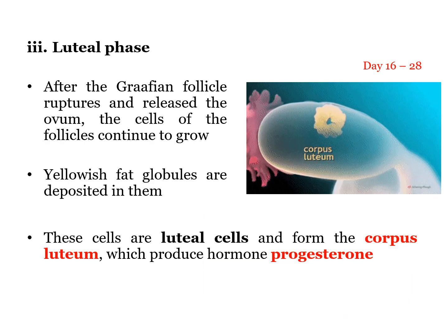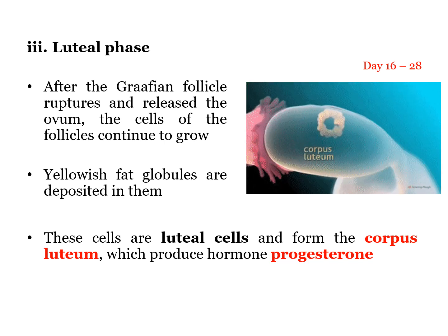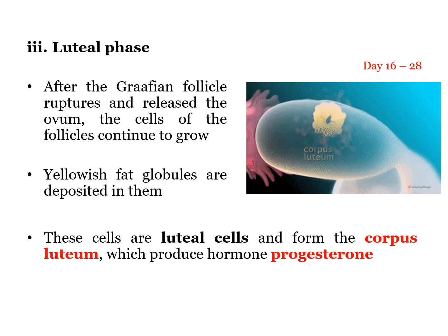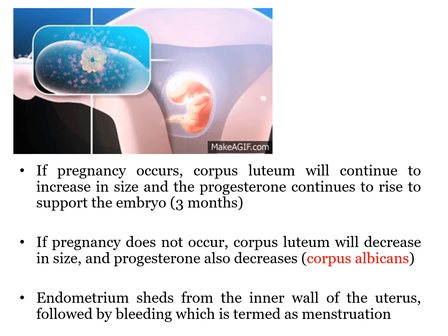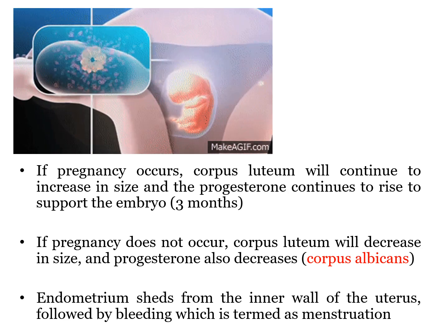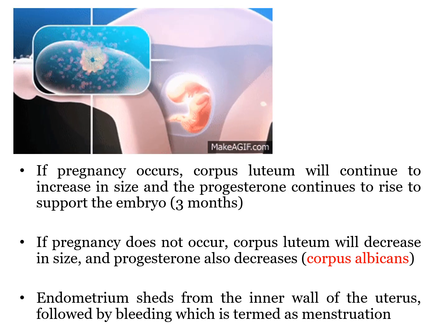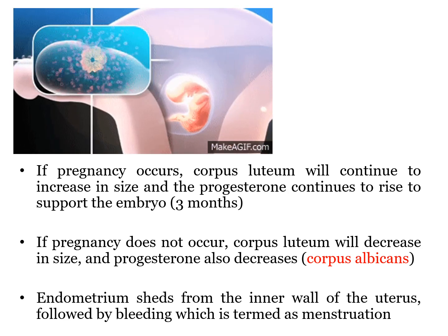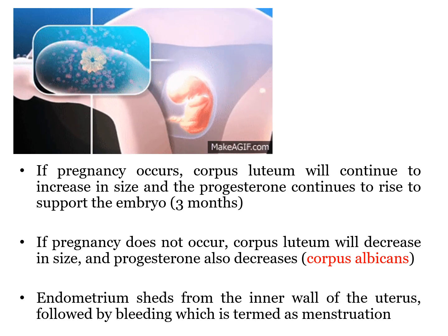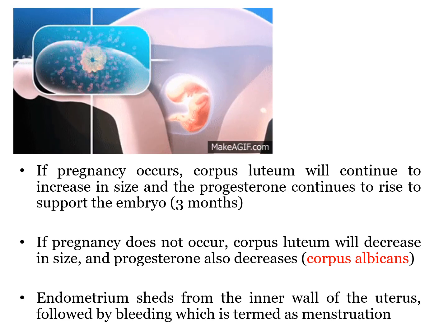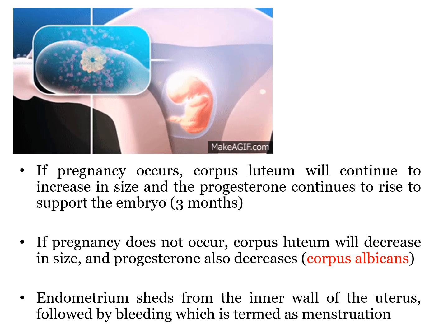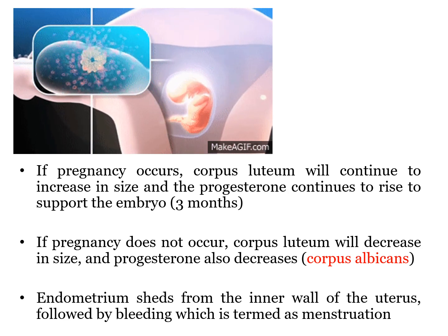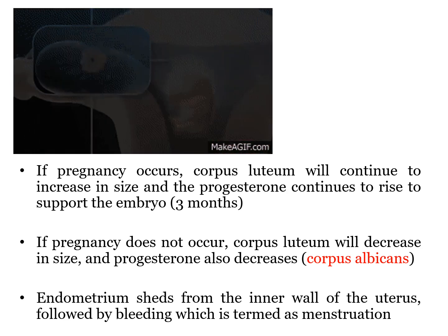After ovulation, the remaining follicle cells or luteal cells will become the corpus luteum. Corpus luteum will secrete the hormone progesterone. Progesterone is responsible for maintaining the thicker uterine lining, thereby supporting the embryo if there is fertilization. However, if there is no fertilization, the corpus luteum will decrease in size and therefore progesterone levels will also decrease. As a result, the endometrium will shed from the inner wall of the uterus, followed by bleeding or menstruation. This last phase is known as the luteal phase.